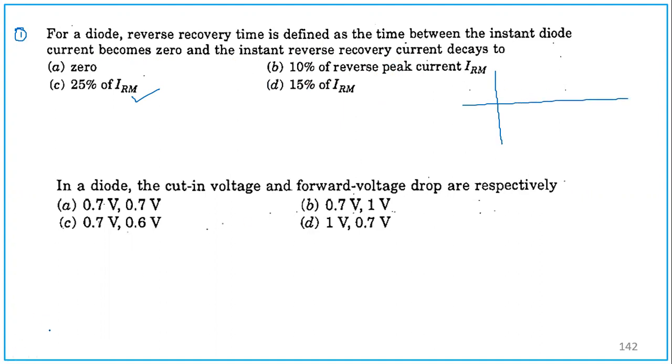This is basically the diode reverse recovery characteristic which you have studied. It will be decaying like this. This is the point where the diode current is becoming zero. Finally, this is reaching a maximum value.